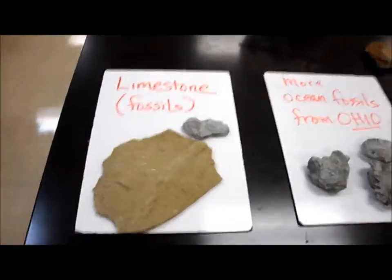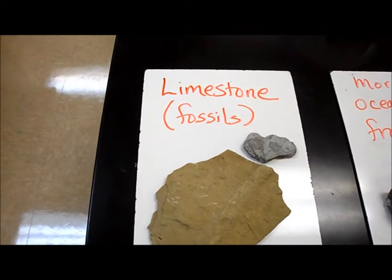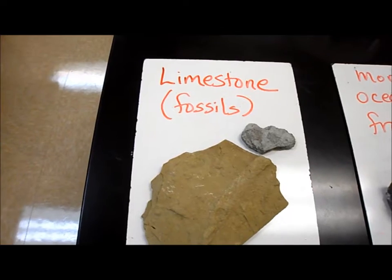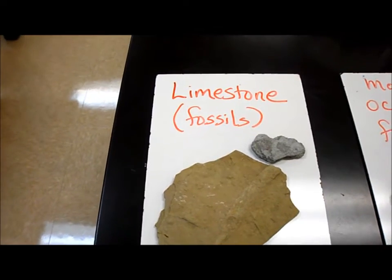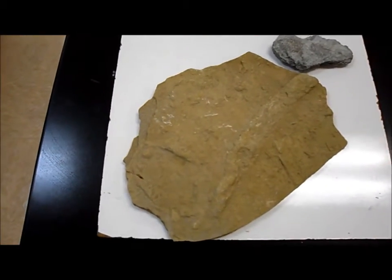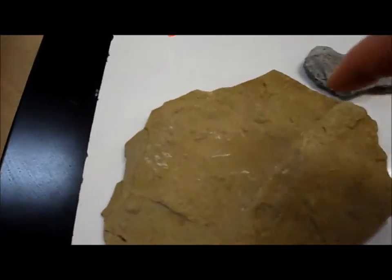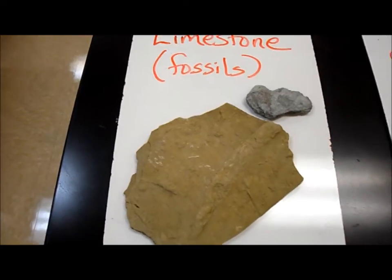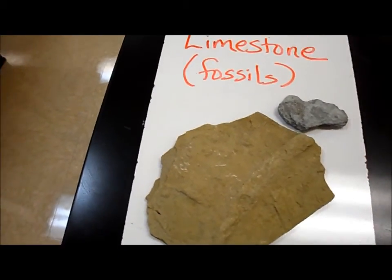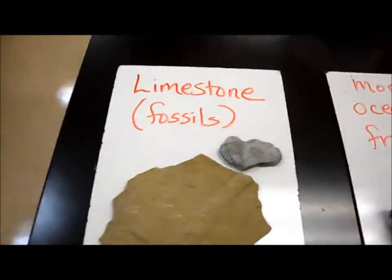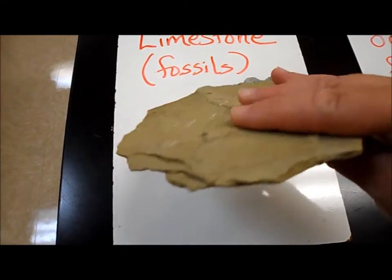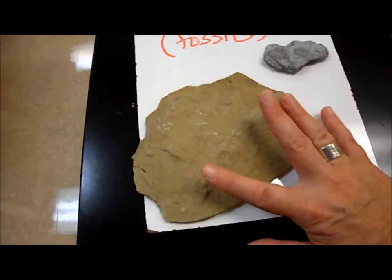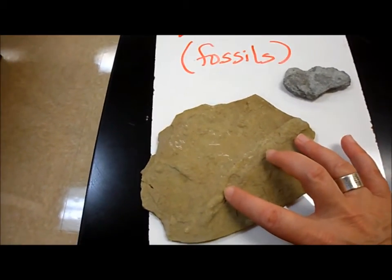First off, we have got some limestone. Limestone is a sedimentary rock. Now all of these samples, by the way, are from the state of Ohio. And if you look at this sample, it looks a little bit like it's caked mud — that's because that's really what it is, it is caked mud. And if I tilt it sideways, you can see the layers of the mud. Now this formed at the bottom of a warm water ocean many years ago.